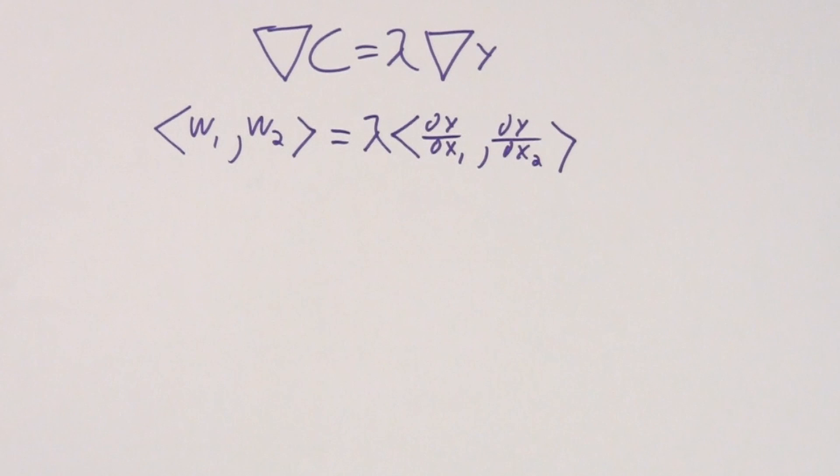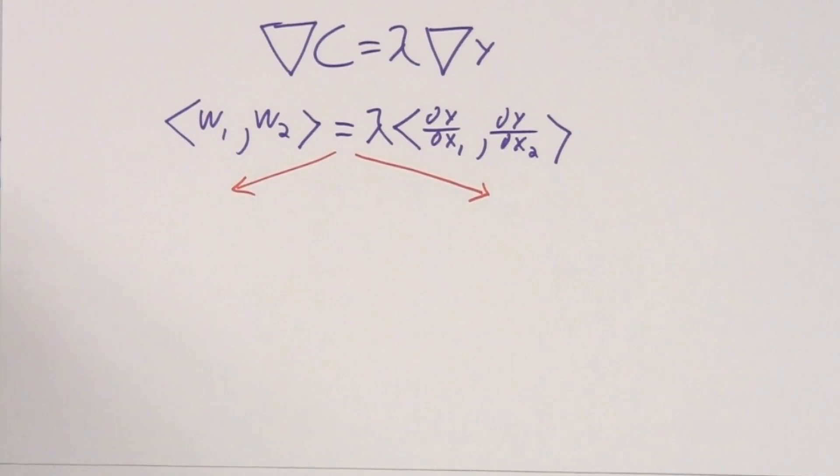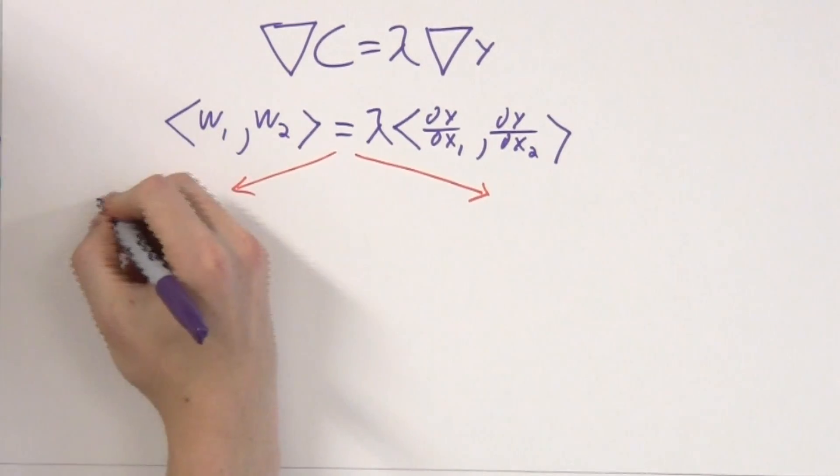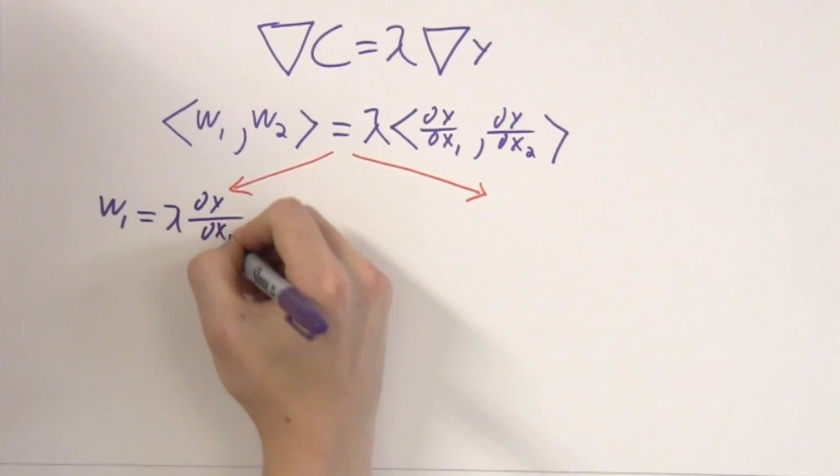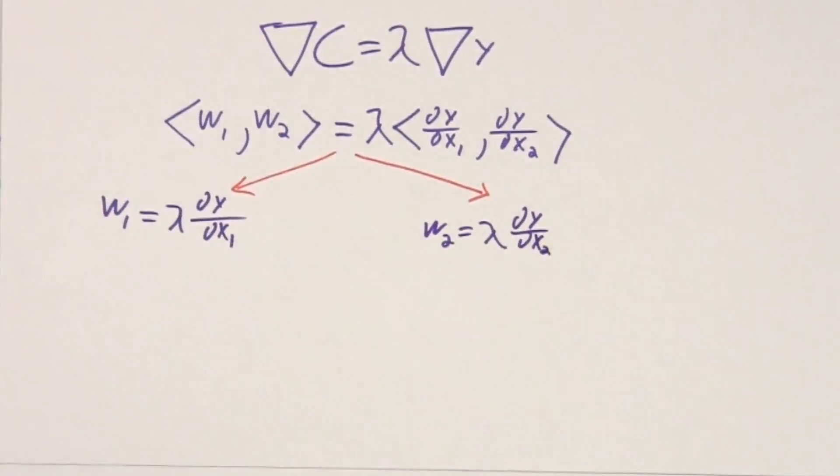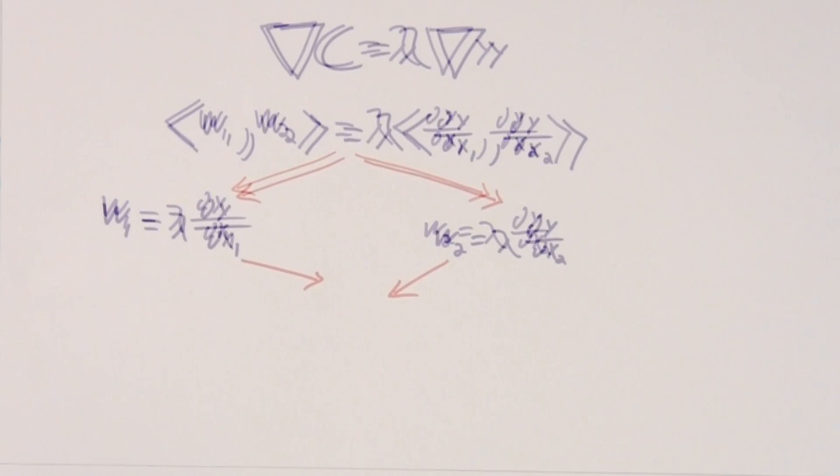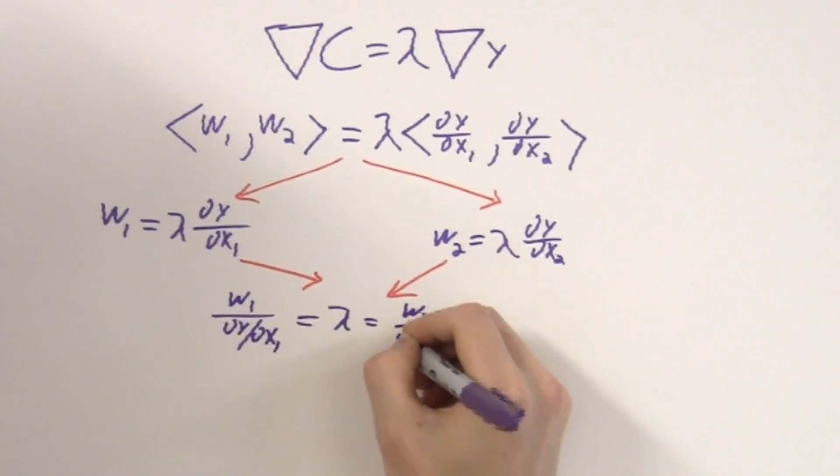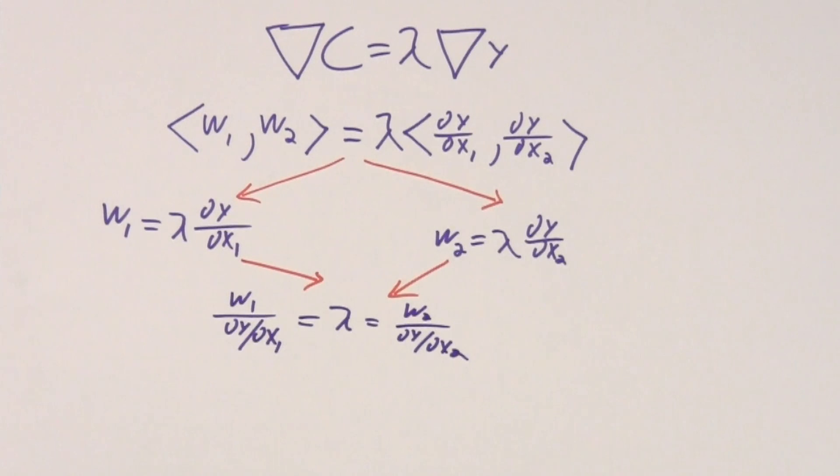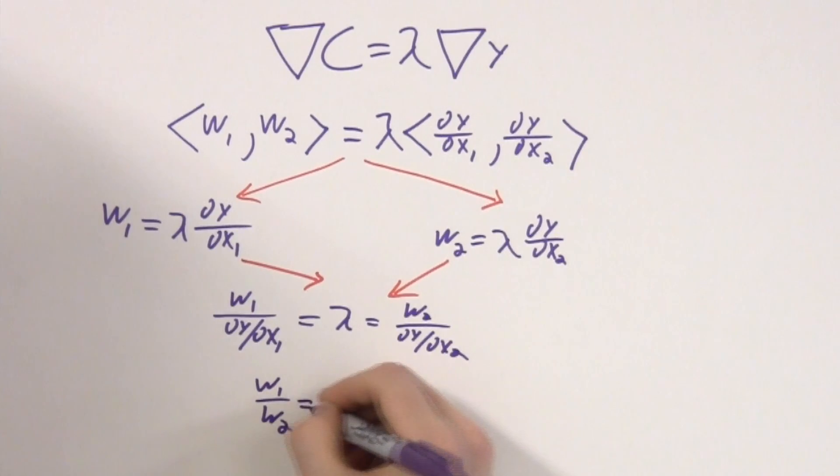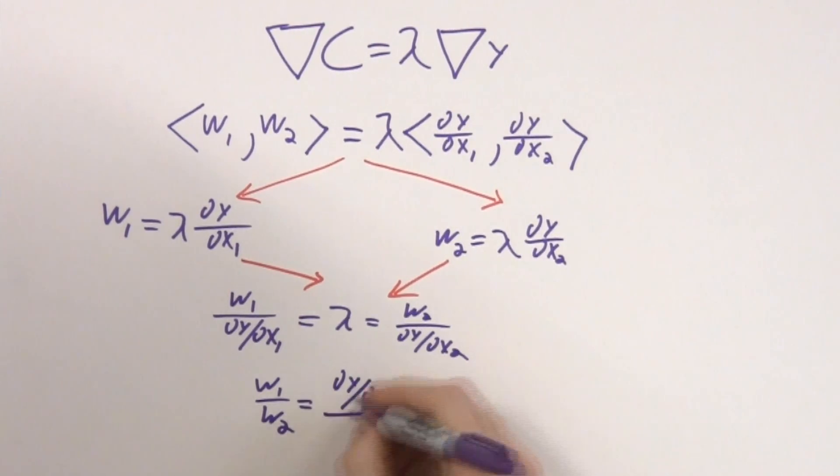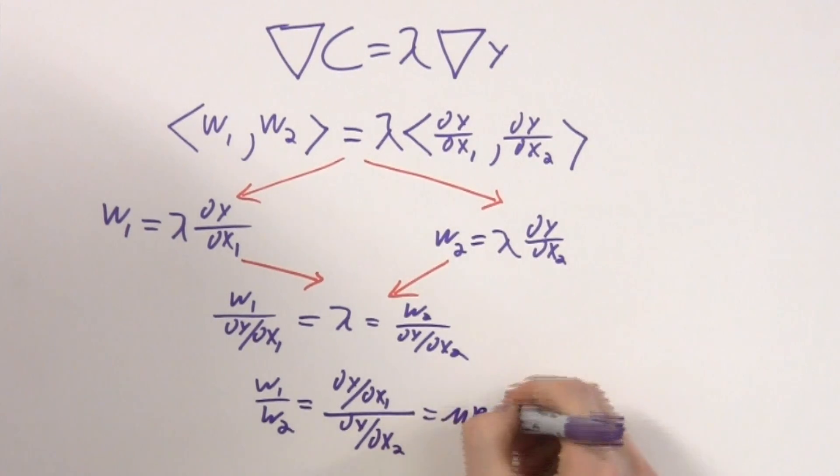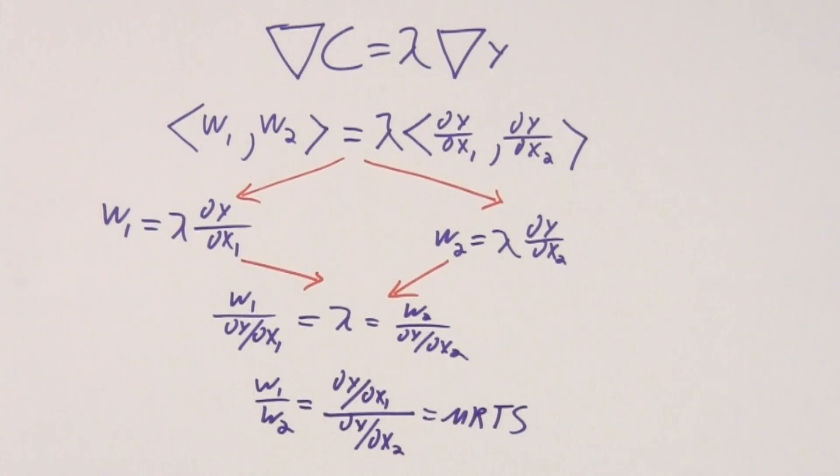Now we have an equation relating two vectors, so we can split it into two equations by setting their components equal to each other. We get w1 equals lambda times the partial derivative of y with respect to x1, and w2 equals lambda times the partial derivative of y with respect to x2. Both of these equations have lambda in it, and we don't really know what lambda is, and we don't really want to find it either. So we can solve both of these equations for lambda and set them equal to each other, thereby eliminating lambda as a variable. We then rearrange and get the expression w1 over w2 equals the partial derivative of y with respect to x1 over the partial derivative of y with respect to x2. This is equal to the MRTS. So we get the equation w1 over w2 equals the MRTS.